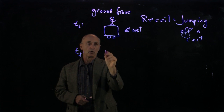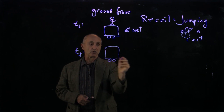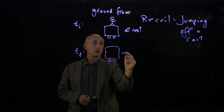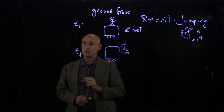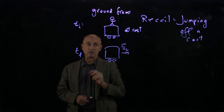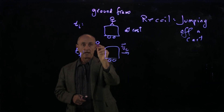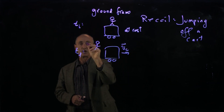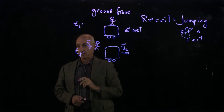After the jump, we can describe this picture: the cart is moving with velocity vc, and the person has jumped with velocity vp.